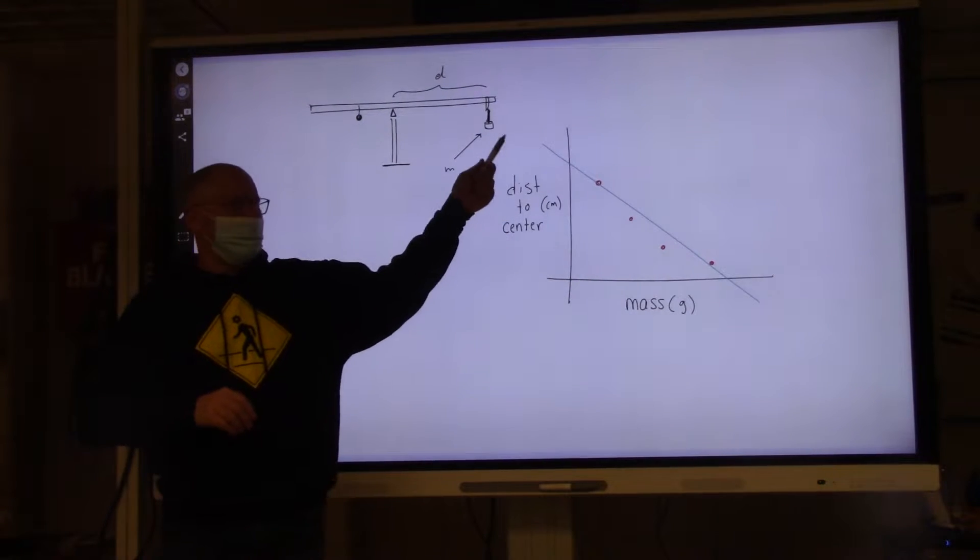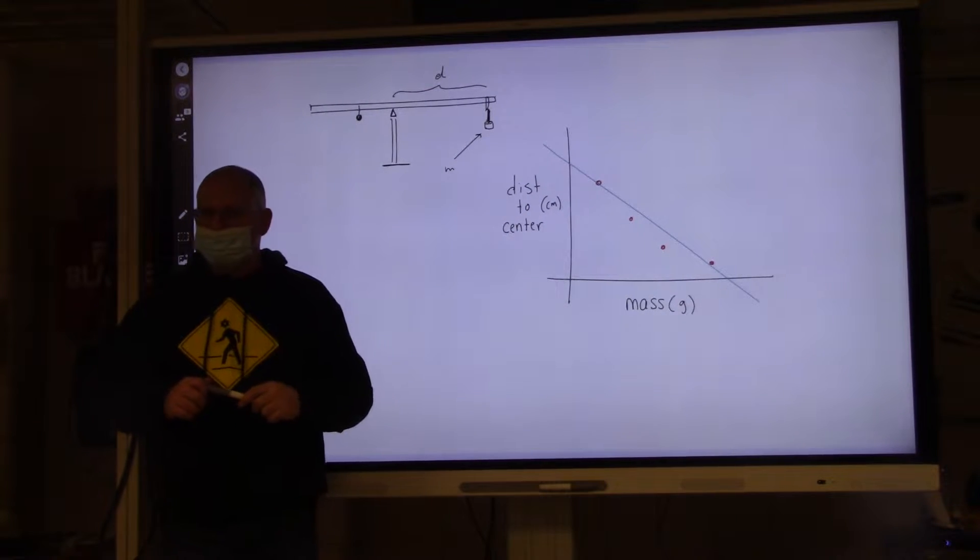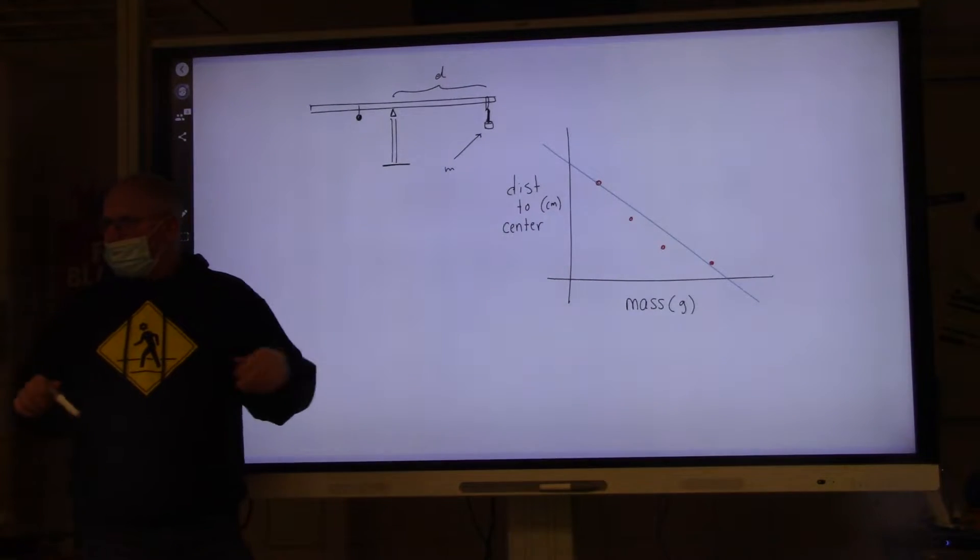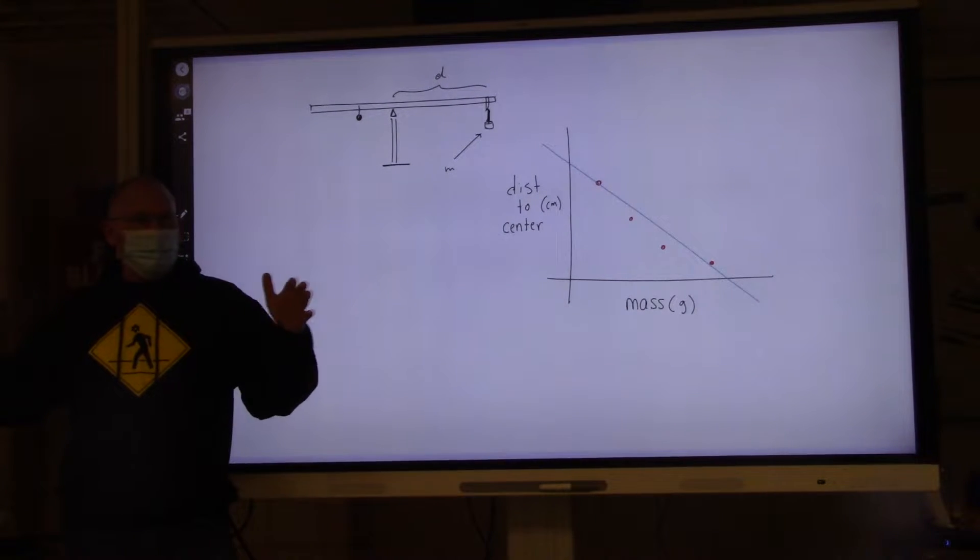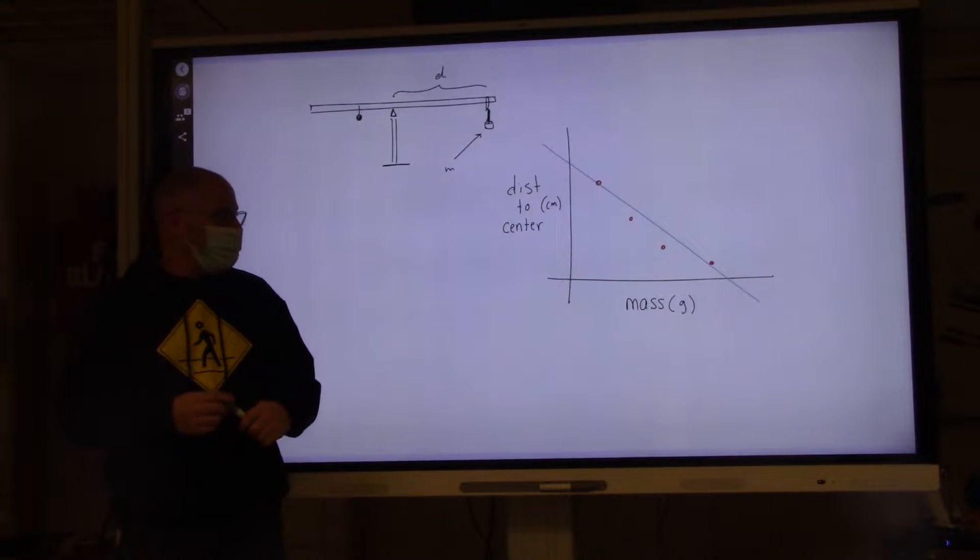What does this mean that there are values to the left of the vertical axis here? There's outliers? No, like in terms of the axis. Well, you can't have negative mass. Can mass be negative? No.